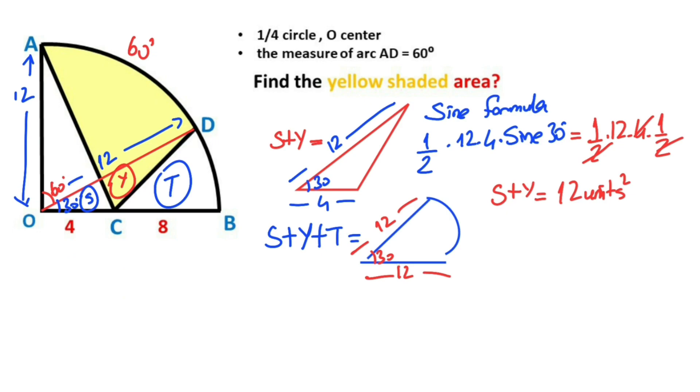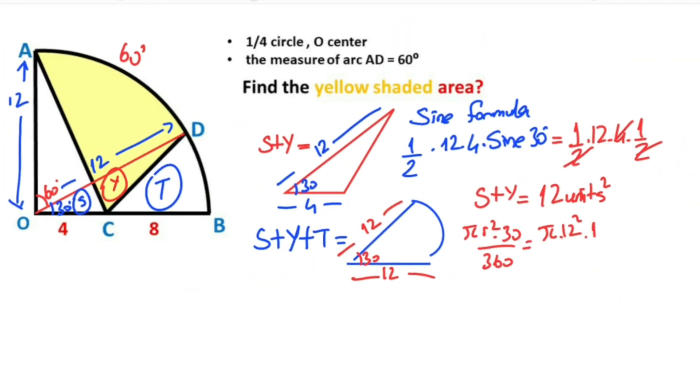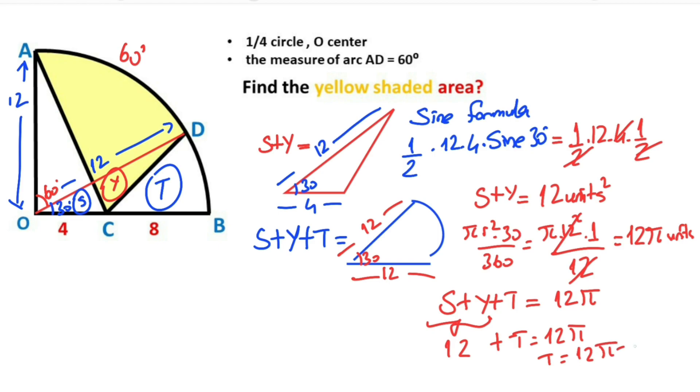The circle sector area equals π times r squared times 30 over 360. We know that r equals 12, so simplifying gives us 12π units squared. That means S plus Y plus T equals 12π. Since S plus Y equals 12 units squared, T equals 12π minus 12.